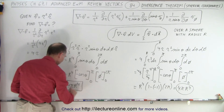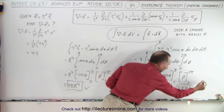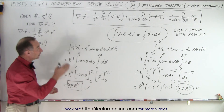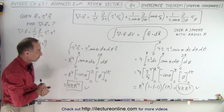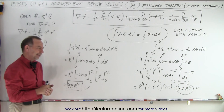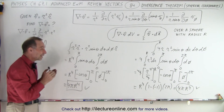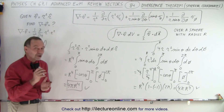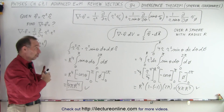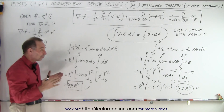Both answers are indeed the same, so we've shown that even in spherical coordinates the divergence theorem holds. Of course it should hold. That said, we're going to show an example where the divergence theorem appears not to hold — and that's interesting because the divergence theorem should always be correct.